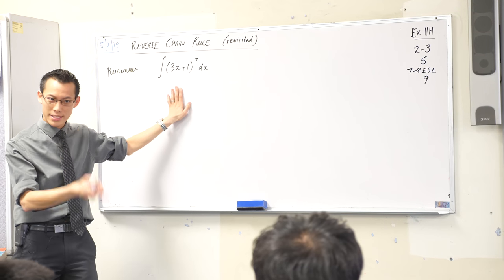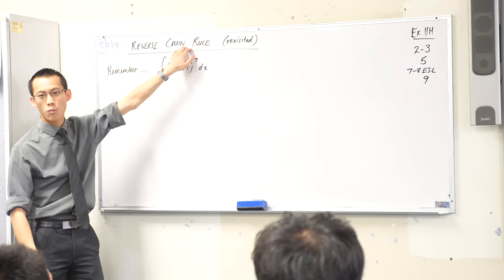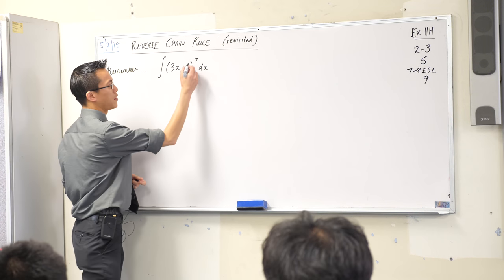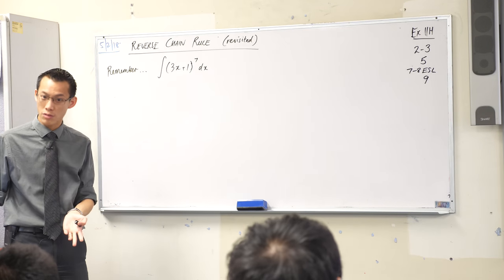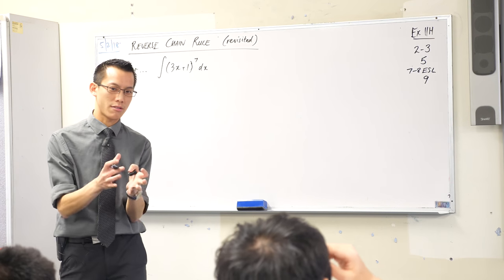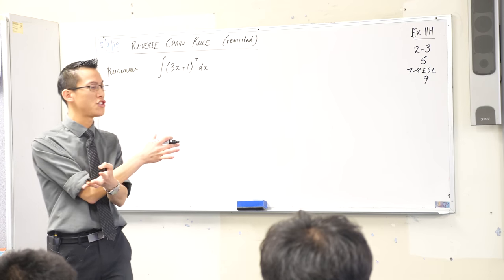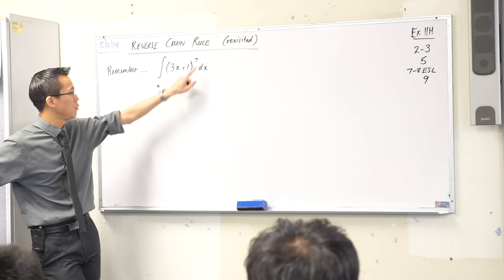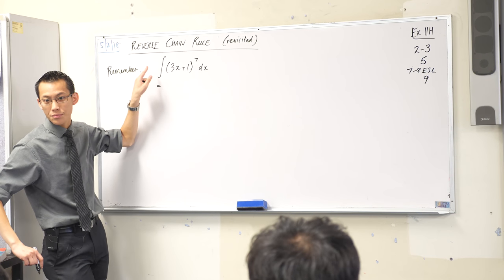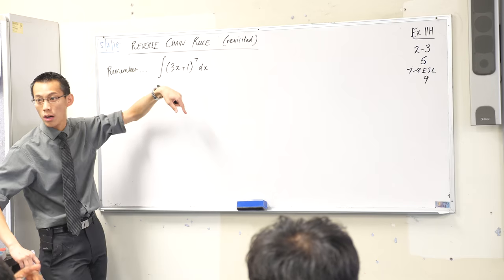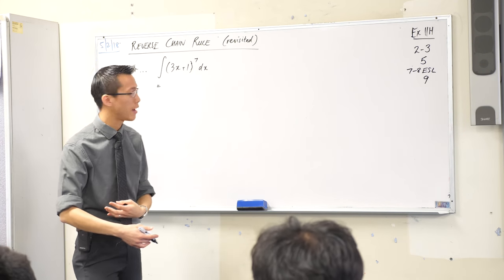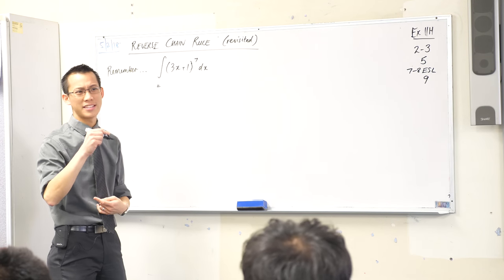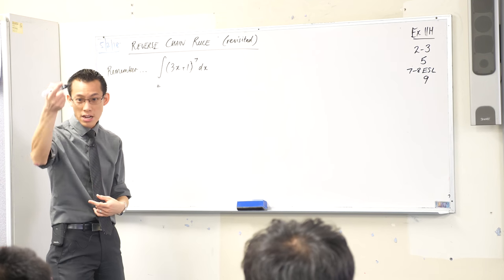You do not want to expand this, so instead you should learn from what you used back in differentiation to think, wait, this looks like something familiar. If you were asked to differentiate something like this, it would be quite straightforward, and because integration is very much to do with the reverse of differentiation, you can use this knowledge. So normally what would you do if you were differentiating? You would multiply by the power and then you'd reduce the power by one.